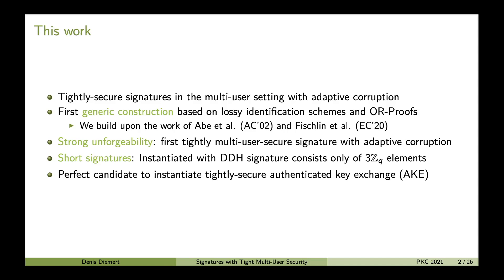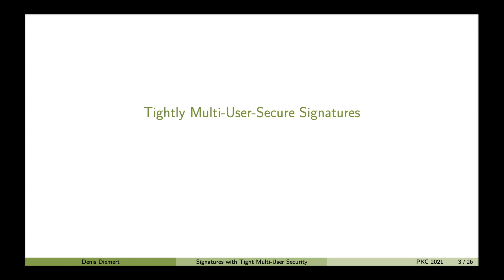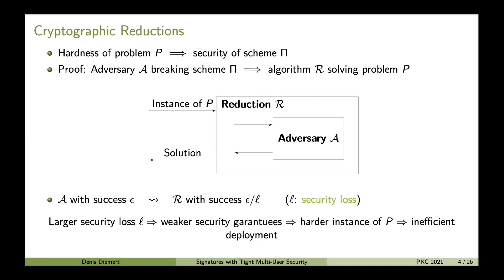After giving you a short overview of our work, I would like to get to the details. I'll start talking about tightly multi-user secure signatures, first covering the concept of tight security and then multi-user secure signatures. Before we can talk about tight security, we need to talk about cryptographic reductions. When we want to prove the security of some scheme π, say a signature scheme, we first define a security model, then pick some problem P assumed to be hard, and show that if P is hard, then our scheme π is secure.